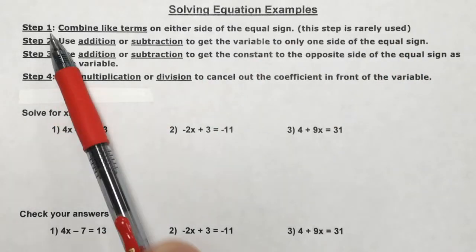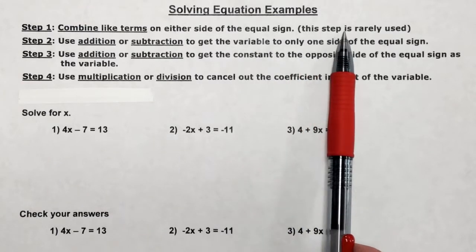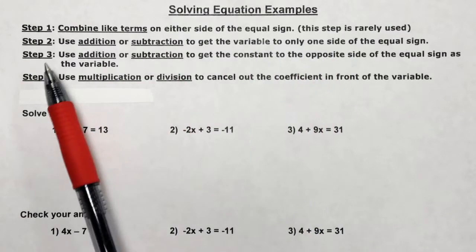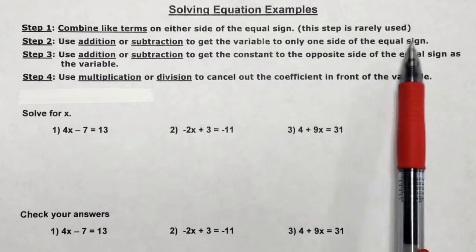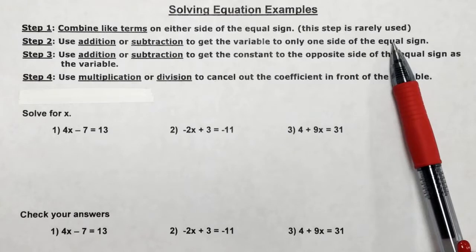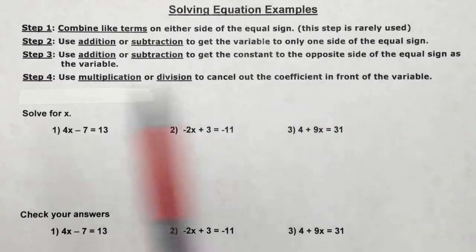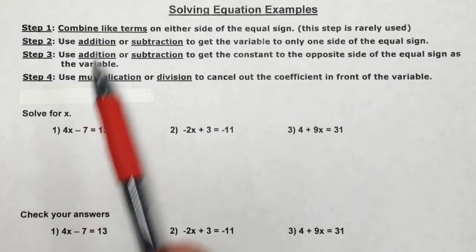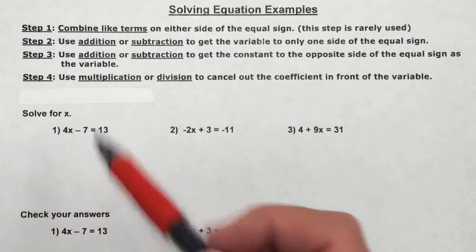Step one says combine like terms on either side of the equal sign. That's rarely used and is only going to be used on problem number six. Step two: use addition or subtraction to get the variable to only one side of the equal sign — that starts being used on problems four, five, and six. Step three and four are going to be used for every single one of these problems. So let's look at number one and start applying these steps. Solve for x.